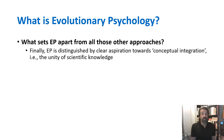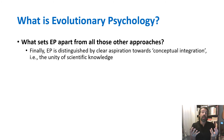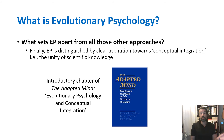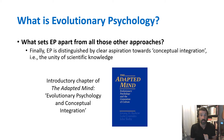One other point about EP that distinguishes it from other approaches is its clear aspiration towards being part of a conceptually integrated view of human knowledge. It sees scientific knowledge as being part of a grand puzzle, and evolutionary psychology is trying to fill in some of the pieces of that puzzle. In fact, the introductory chapter of The Adapted Mind is called "Evolutionary Psychology and Conceptual Integration," and Cosmides and Tooby thought this concept was so important that they kicked off their landmark book with a chapter devoted to it.